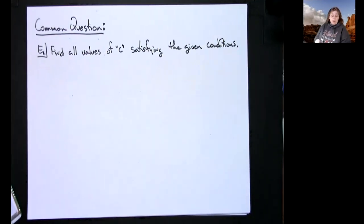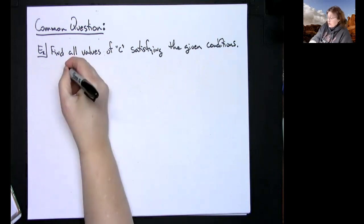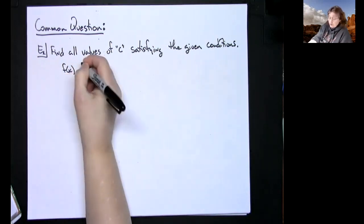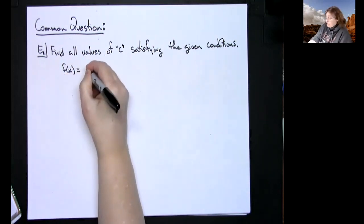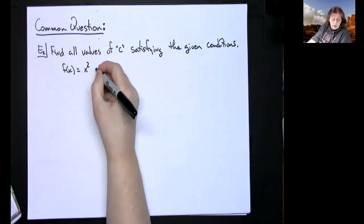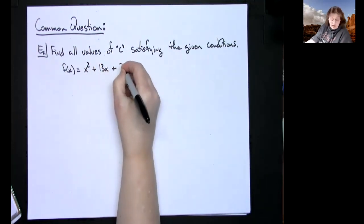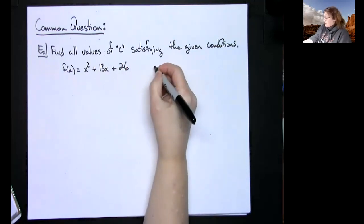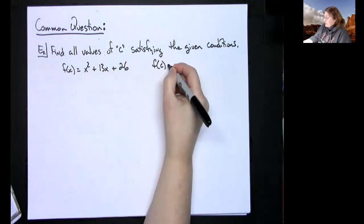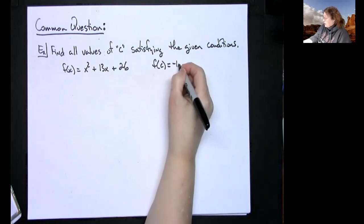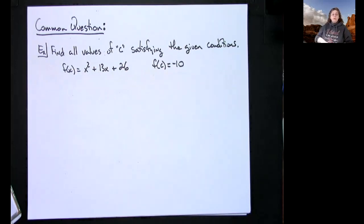So there's the directions and then they give you a couple of things. They give you a function, f(x) is equal to x squared plus 13x plus 26, and then they tell you f(c) is equal to negative 10, and you're supposed to find all values of c satisfying the given conditions.